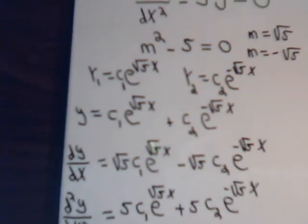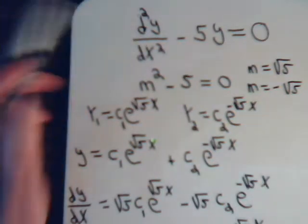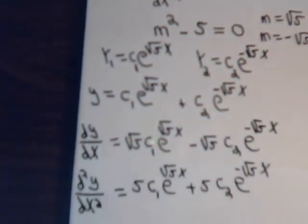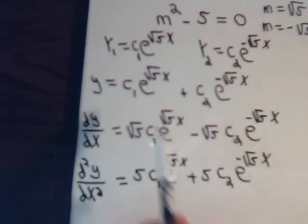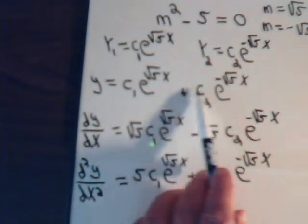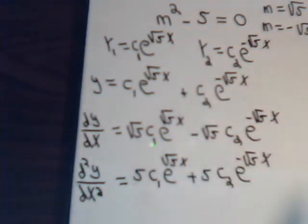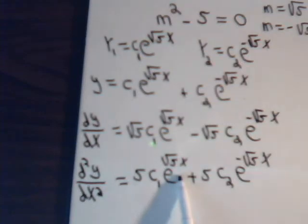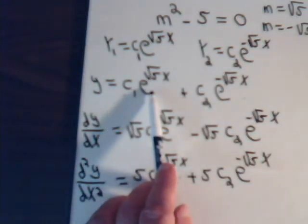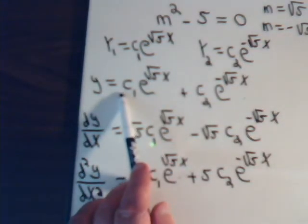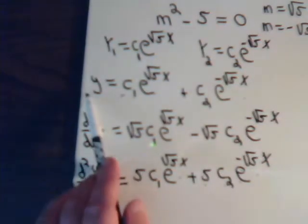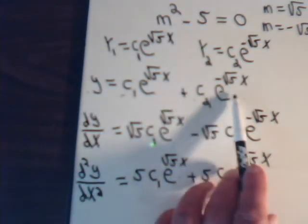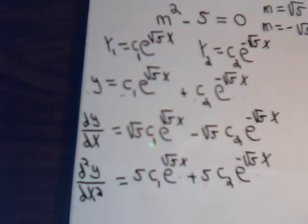Our differential equation that we wanted to solve was the second derivative minus 5 times y equals zero. So we have 5 c1 e to the square root of 5x, minus 5 times c1 e to the square root of 5x — that's zero. And here we have 5 c2 e to the minus square root of 5x, minus 5 times c2 e to the minus square root of 5x — that comes out to zero.